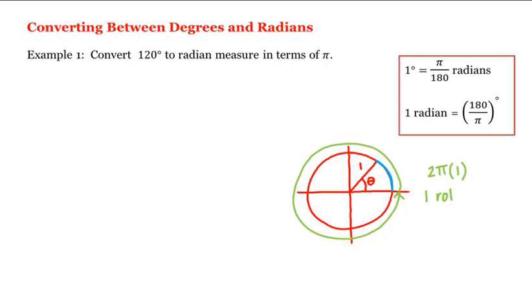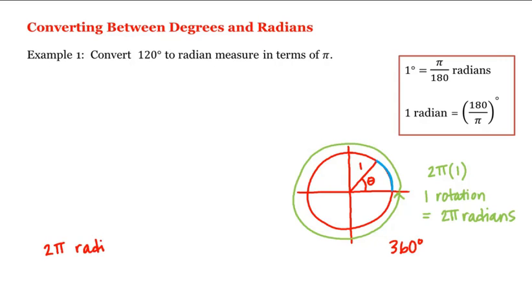Therefore, one full rotation measures two pi radians. And what is the degree measure of one full rotation? That's 360 degrees. So regardless of what measure we use, one full rotation must be the same: two pi radians is equal to 360 degrees. Dividing both sides by two, we get pi radians equals 180 degrees.